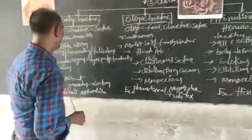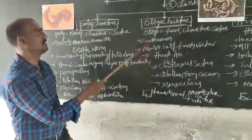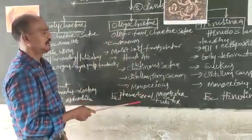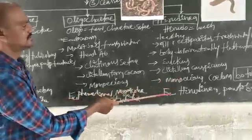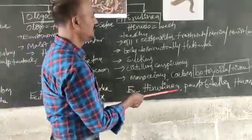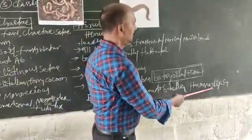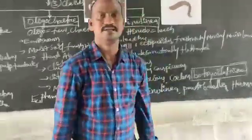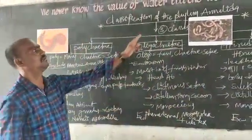Examples are Nereis, Aphrodite. Oligochaeta - Eutyphoeus, Pheretima, Megascolex, and Tubifex. Hirudinea - Pontobdella and Haemadipsa. These are the classes of the phylum Annelida.